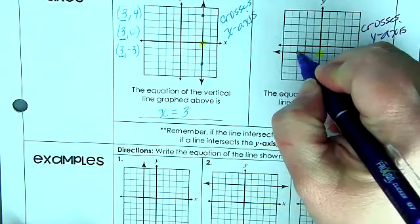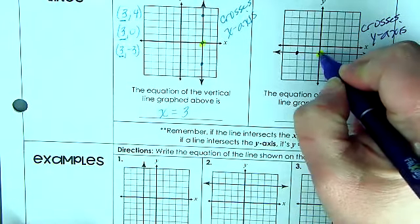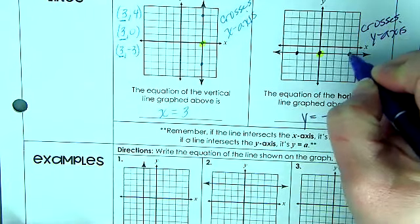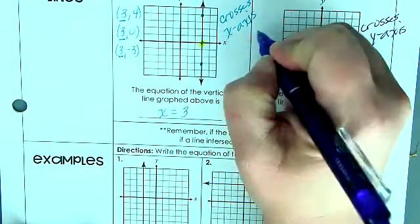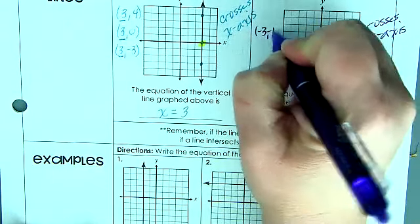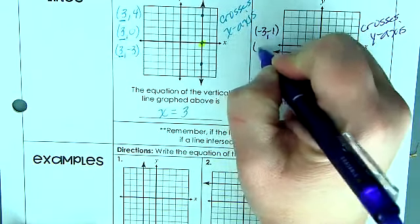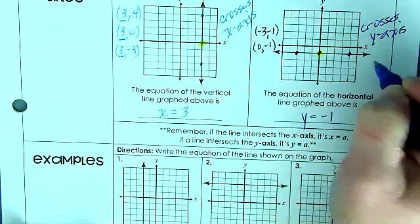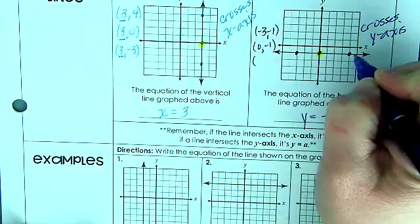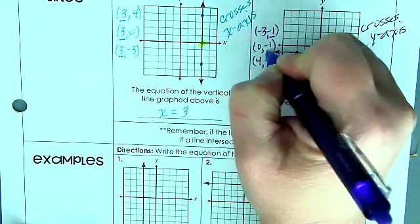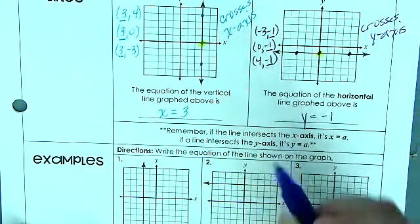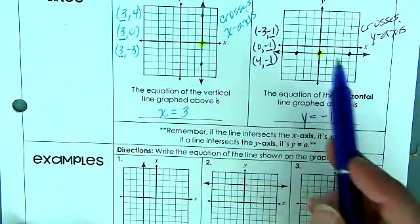So let's confirm by looking at ordered pairs on this graph as well. If I pick this point, this point, and this point and write down the ordered pairs, this is going to be (-3, -1), (0, -1), and (4, -1).